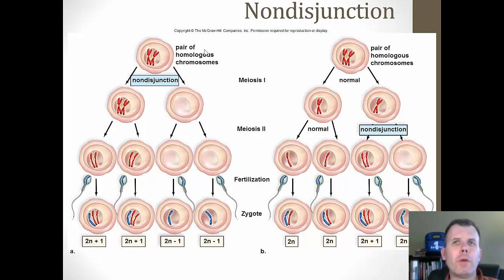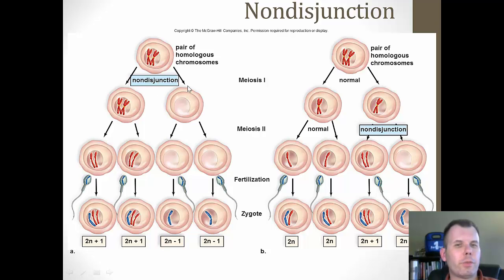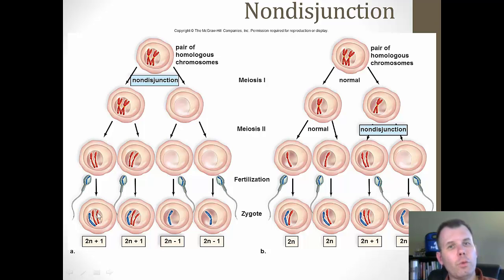Non-disjunction means that the chromosomes don't divide evenly during meiosis. During normal meiosis, chromosomes would split — you'd get one in each cell. However, if non-disjunction takes place at meiosis one, all the chromosomes end up in one cell and none in the other. Then going through the process, those cells with no chromosomes end up with two cells that have only one chromosome and two zygotes that actually have three. And that's one way that could happen.